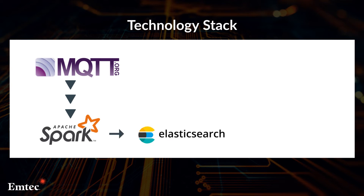Elastic Search is an API-driven tool used to store, search, and analyze any kind of data efficiently. This open source tool is massively scalable and can store NoSQL data. It provides indices over data for faster retrieval.